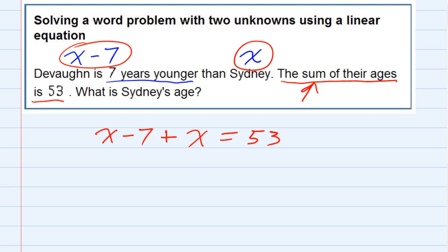So this gives us our equation. We're adding up their two ages. The result is 53. On the left-hand side, I can combine like terms. x plus x gives me 2x minus 7 equals 53.